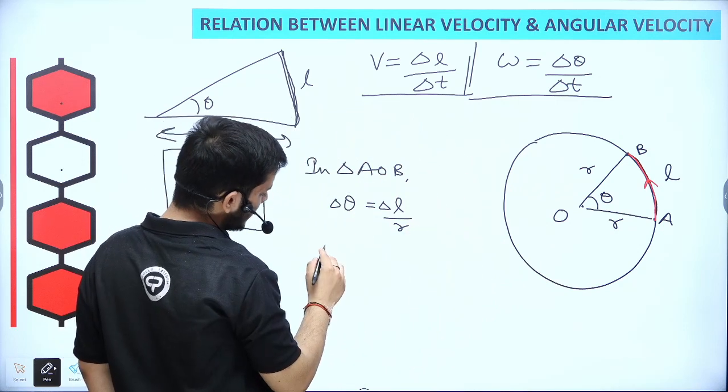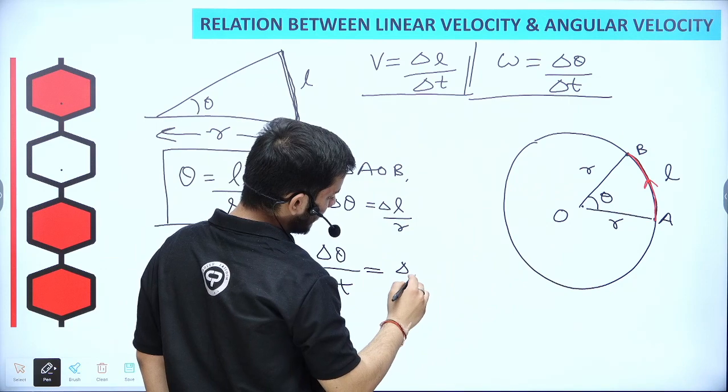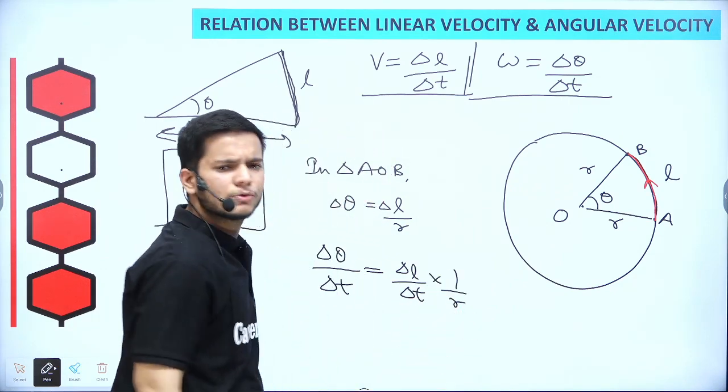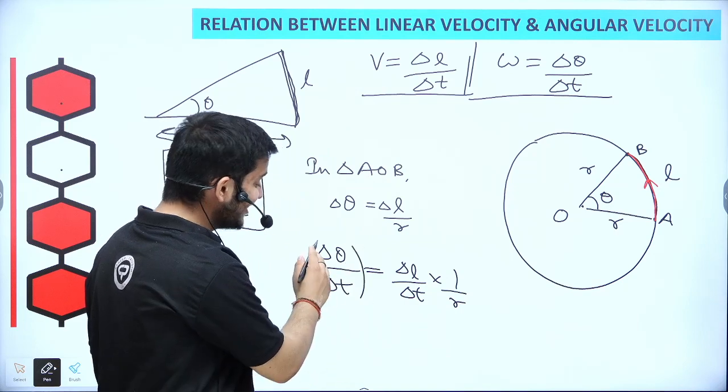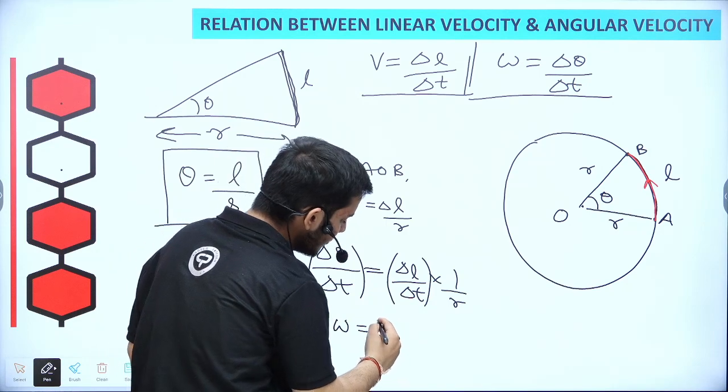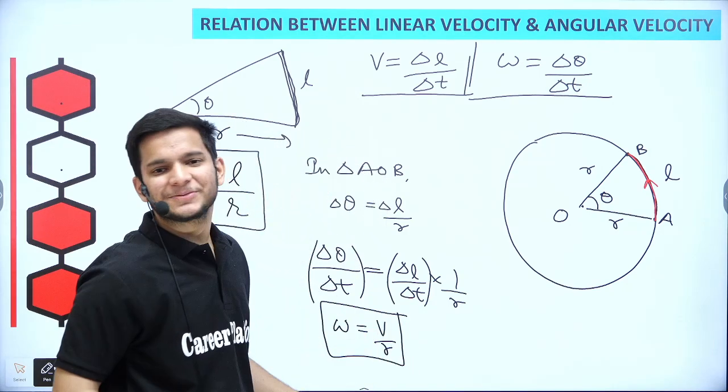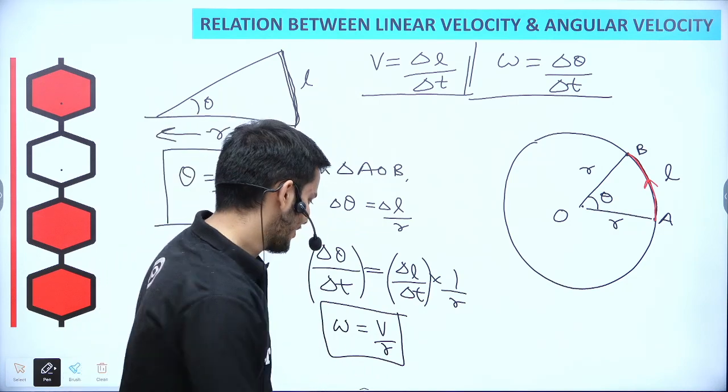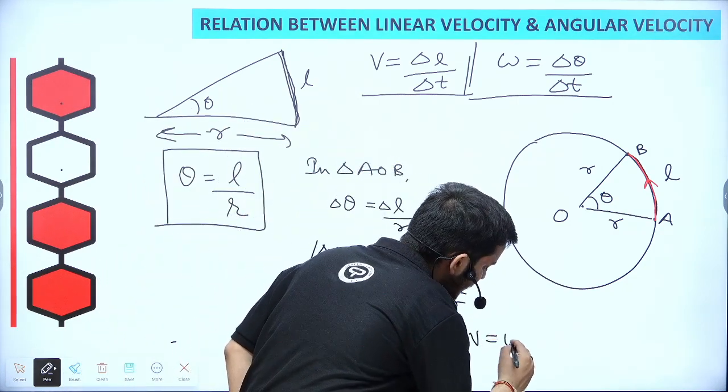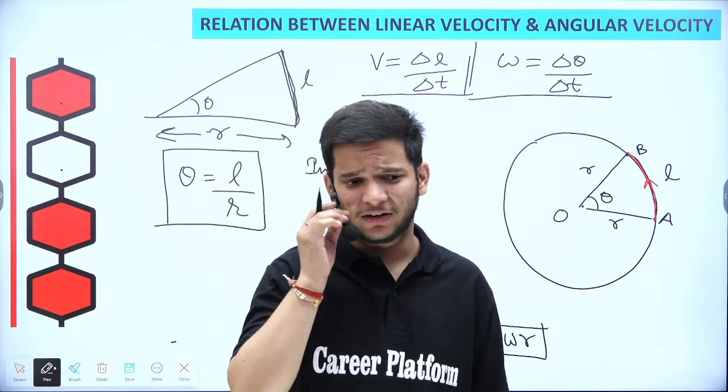So if I divide both sides by del T, then what happens? Omega. And del L over del T? What happens? V upon R. In both terms, in one equation, what happens? Relation. And if I take this R here, then what happens? V equals to omega R, which is the final relation between linear velocity and angular velocity.